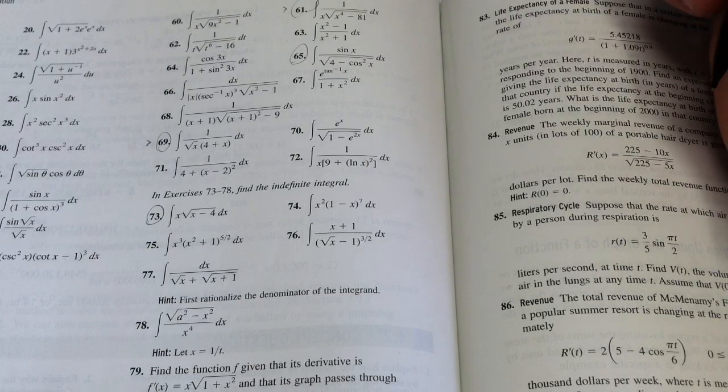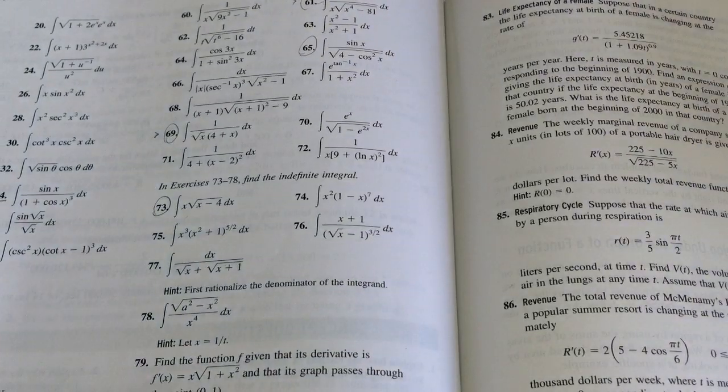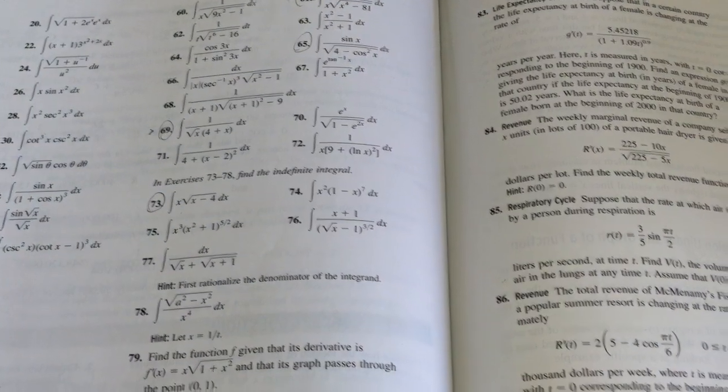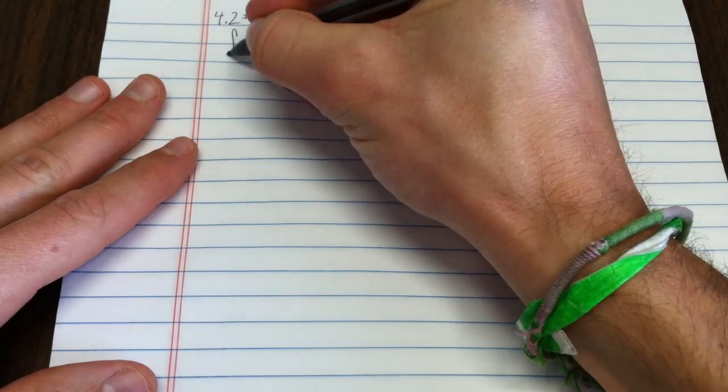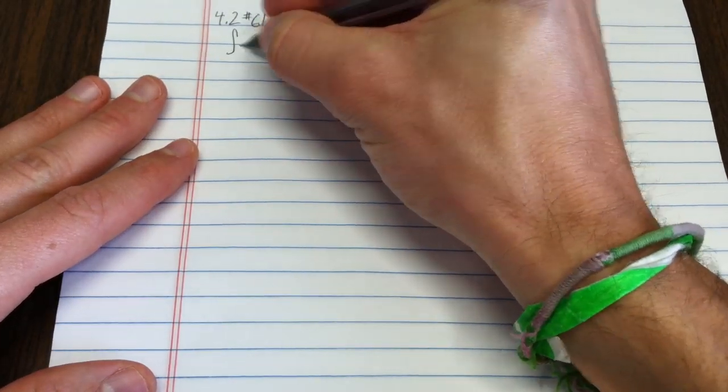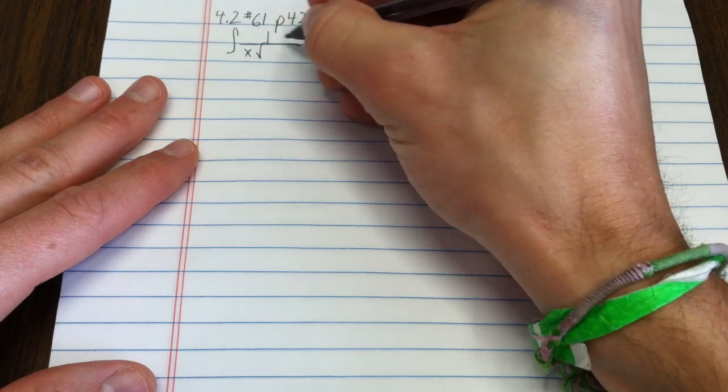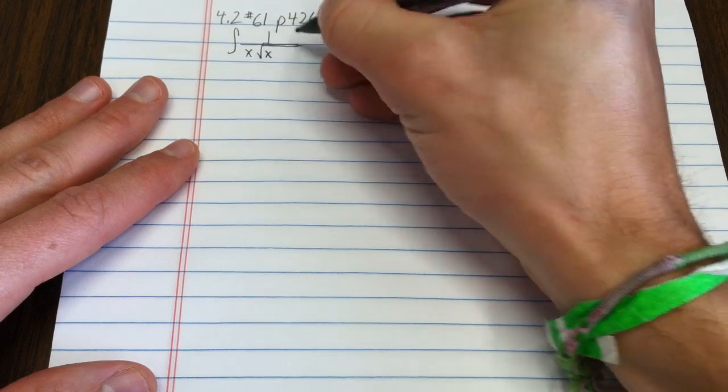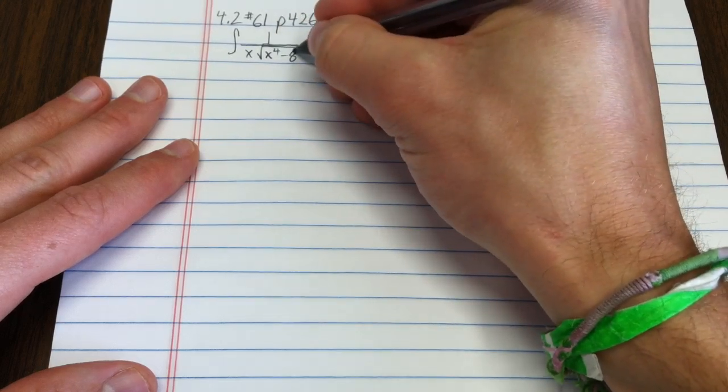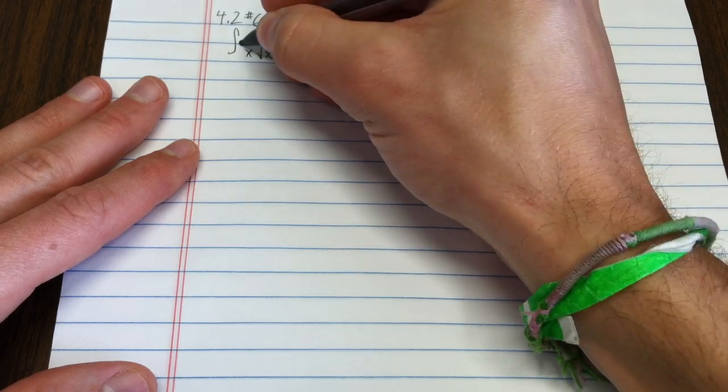So let's see what we can do with that problem. That's the integral of 1 over x square root of x to the fourth minus 81.